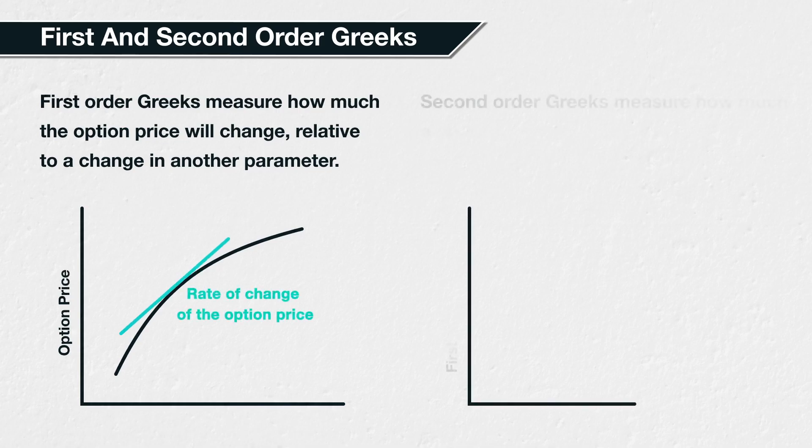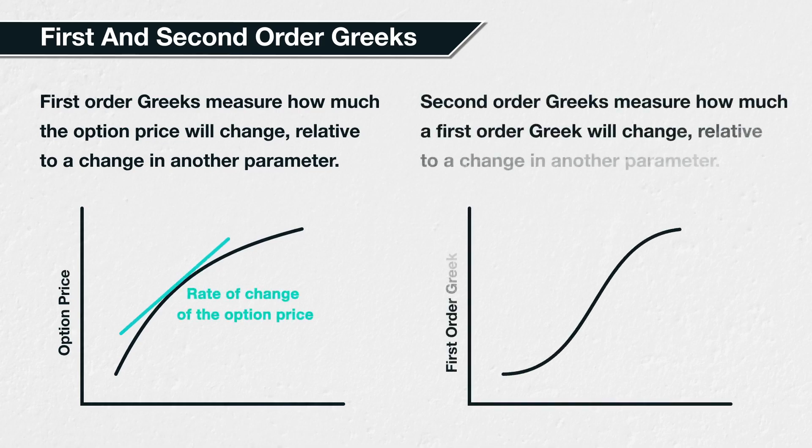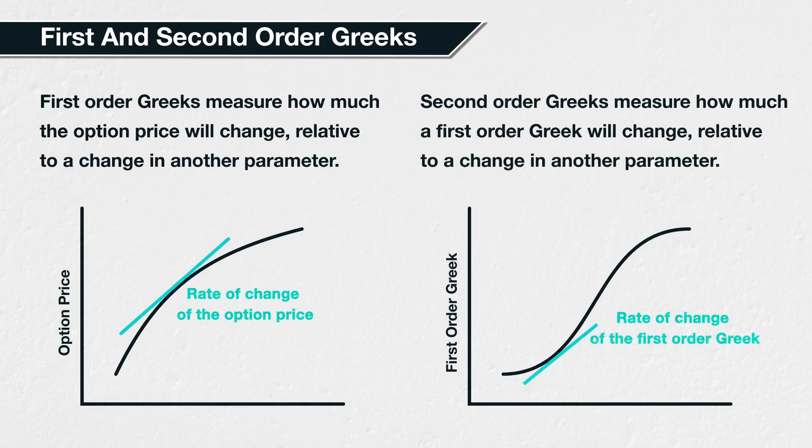Gamma is different, as it is a second-order derivative, and it is the first and only second-order Greek we will be looking at in its own section during this course. First-order Greeks measure the sensitivity of the option price to a change in a particular parameter — in other words, the current rate of change of the option price with respect to the parameter in question.